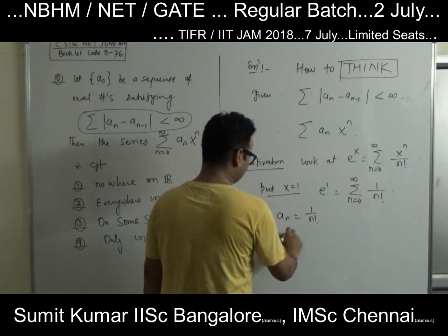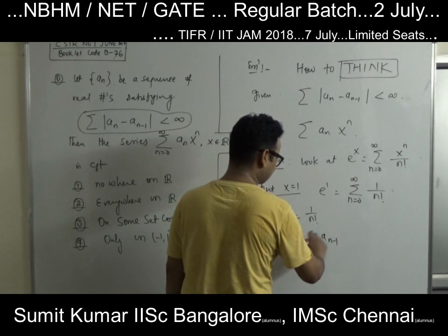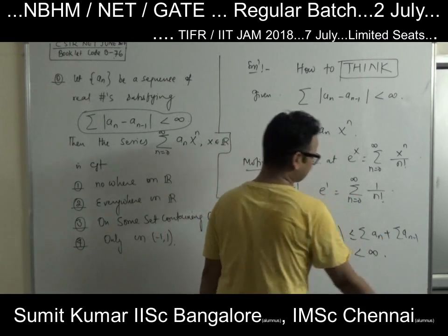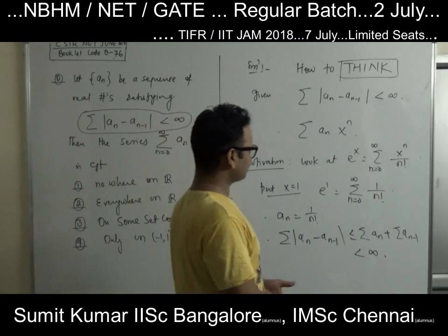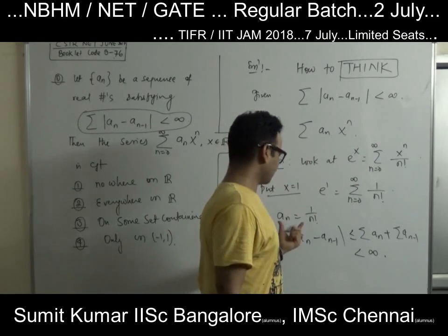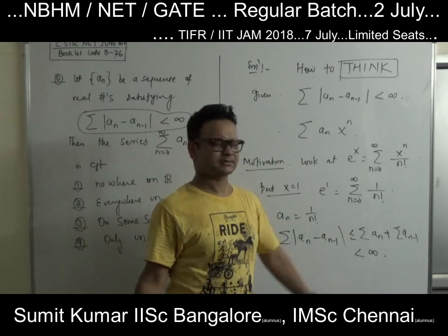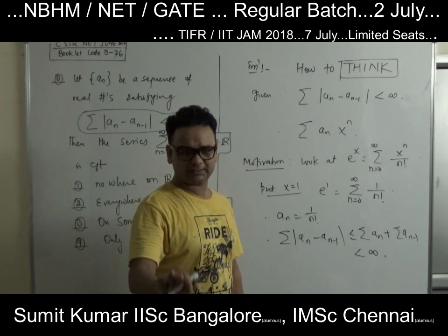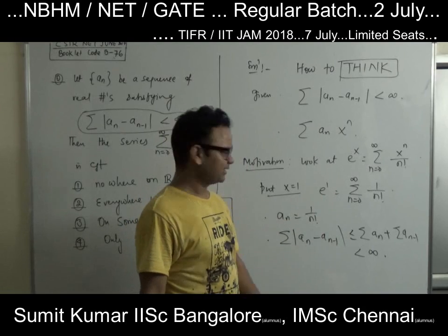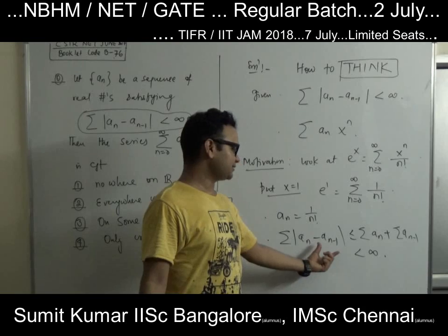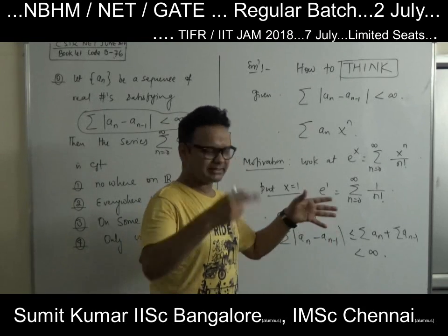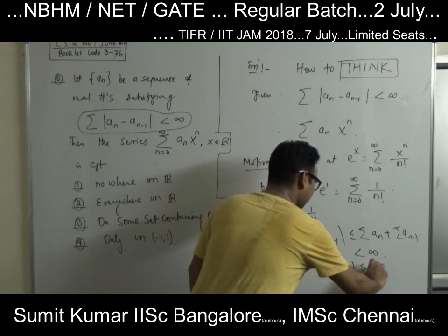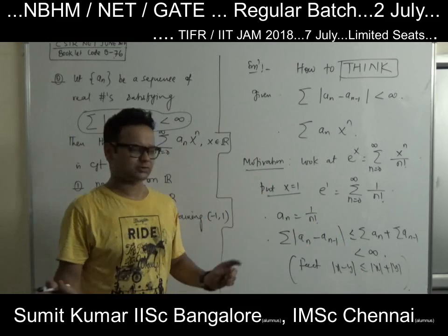Now, what can you say about |Aₙ - Aₙ₋₁|? This is of course less than or equal to Aₙ + Aₙ₋₁, and this series converges — no doubt at all. So using this information, with Aₙ = 1/n!, we can work through this. This series is absolutely converging. In fact, if Σ|Aₙ| converges absolutely, then this difference also converges absolutely. The fact I am using is: |x - y| ≤ |x| + |y|. Using this fact, this series converges.